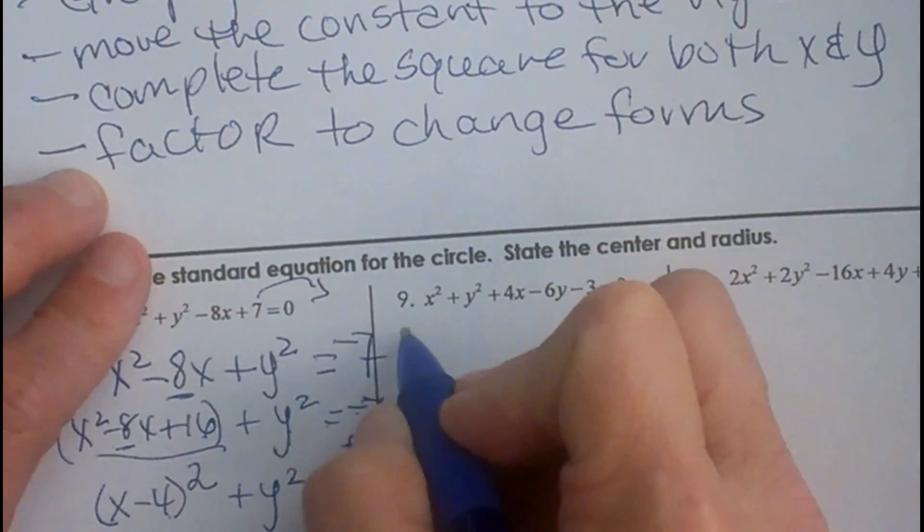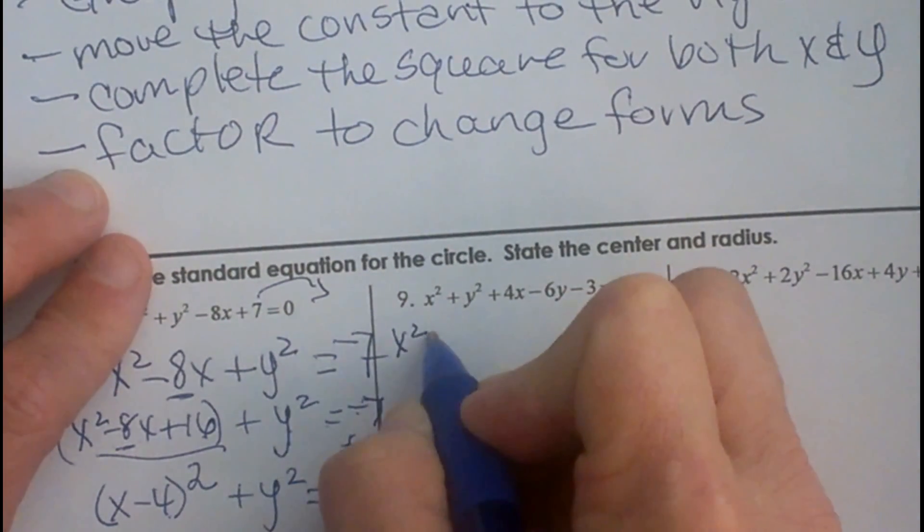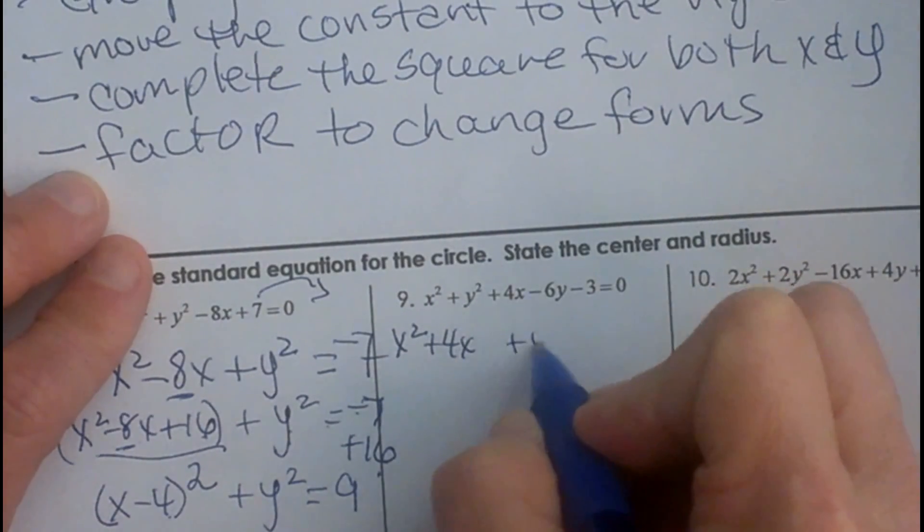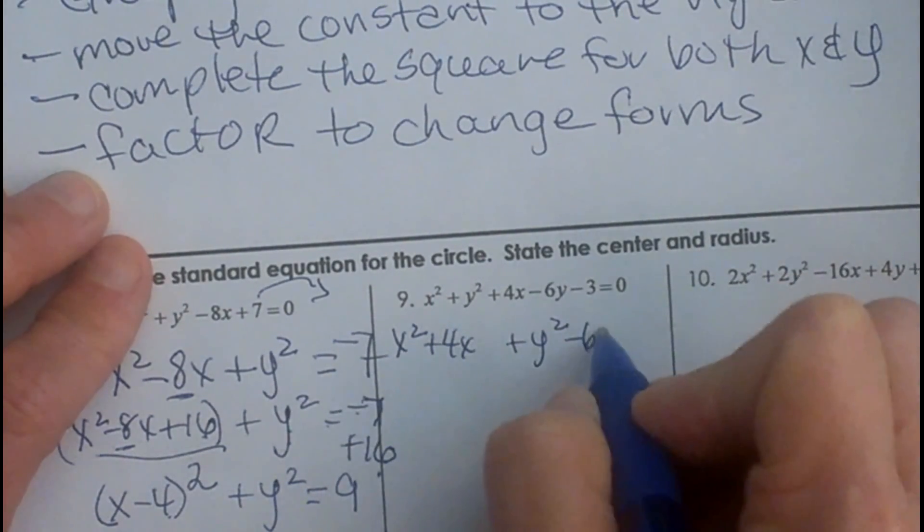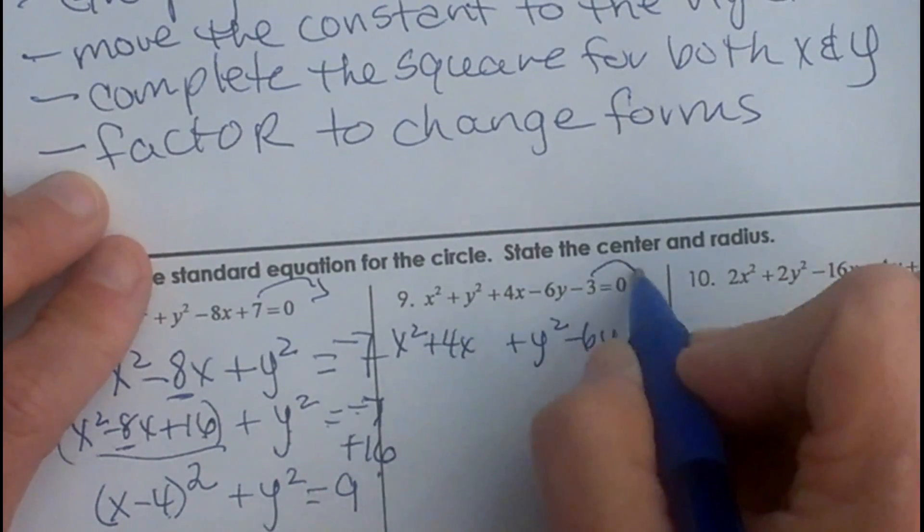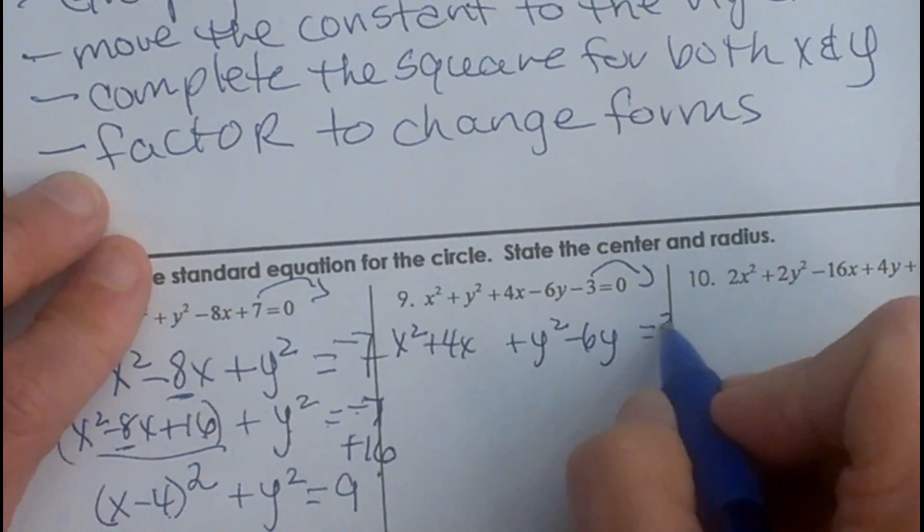Okay so number 9 we are going to put x squared plus 4x together plus y squared minus 6y, put the y parts together, is equal to, I am going to move this 3 to the other side so positive 3.